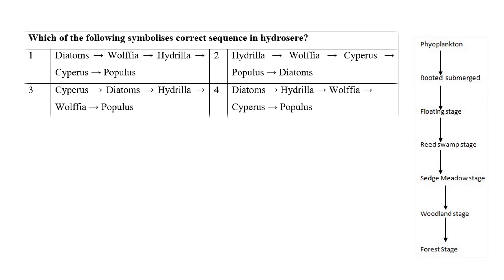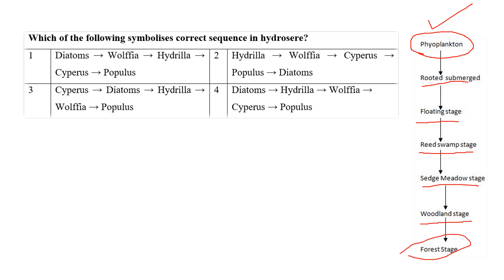Question eight: Which of the following symbolizes the correct sequence in the hydrosere? The hydrosere is the succession in water. The sequence of plant development in a hydrosere is: first, development of phytoplankton; then rooted submerged plants; then floating stage; then reed swamp stage; then sedge meadow stage; then woodland formation; and finally the forest stage. The correct answer is the fourth option: diatom, then hydrilla, wolfia, cypress, and populus.